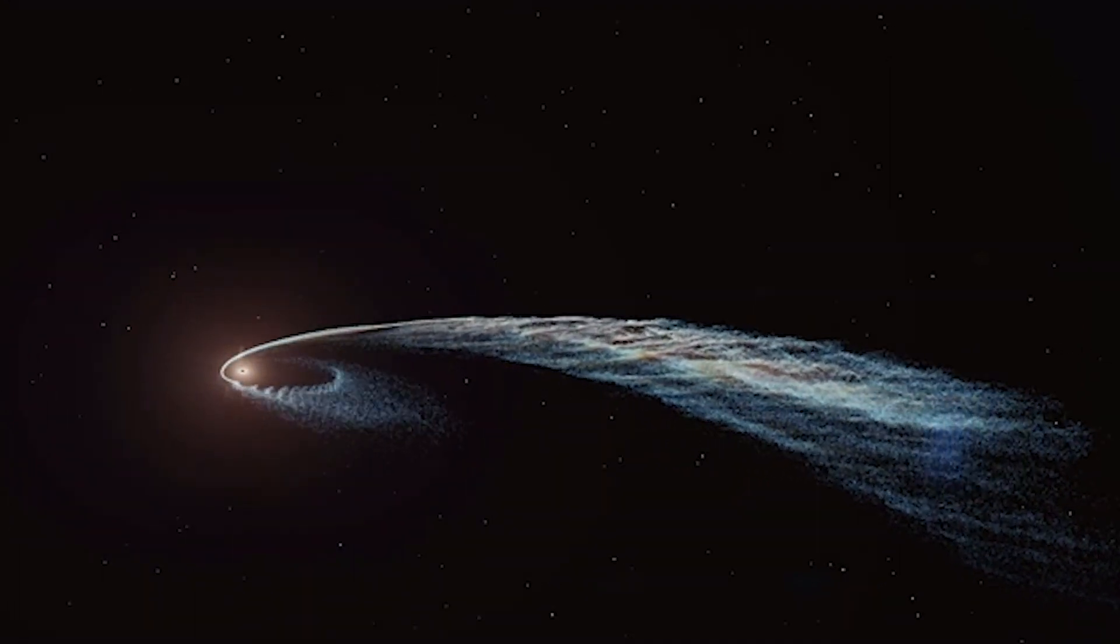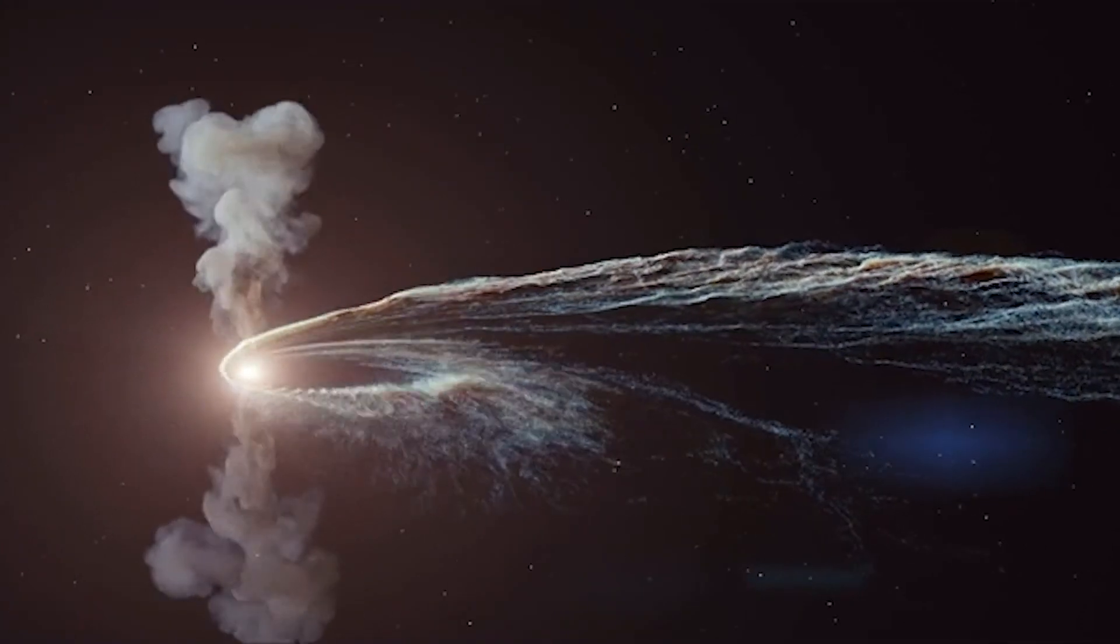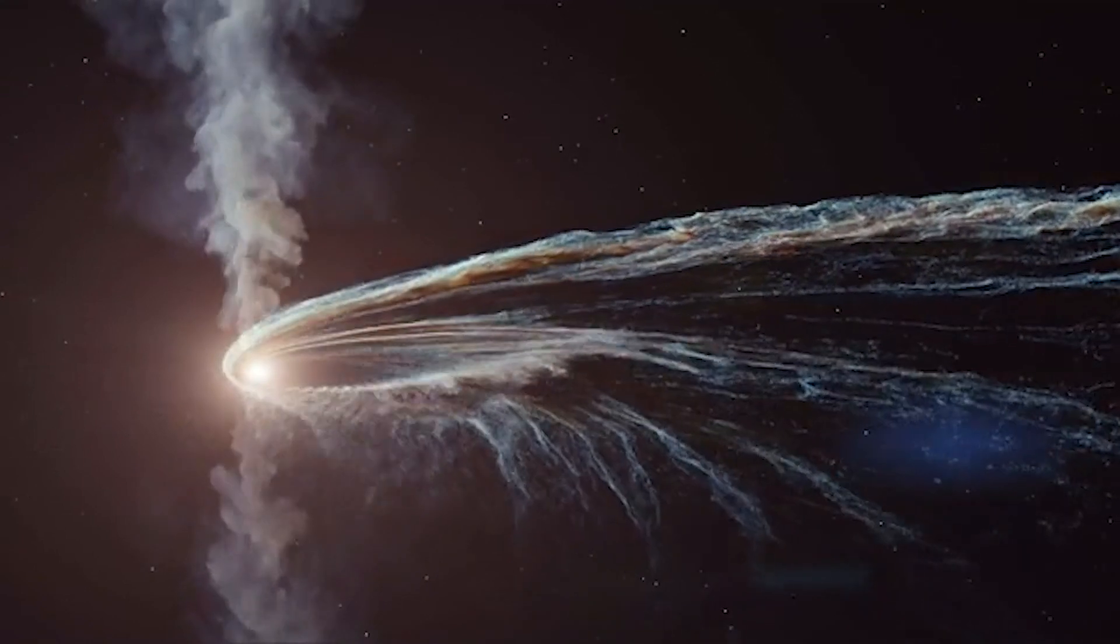Half the matter that's left shoots off into space. The rest swirls around the black hole, forming a bright ring of matter known as an accretion disk.